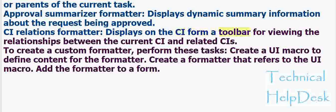Additional formatter examples include: Approval Summarizer Formatter, which displays dynamic summary information about the request being approved; and CI Relations Formatter, which displays on the CI form a toolbar for viewing relationships between the current CI and related CIs. To create a custom formatter, perform these tasks: create a UI macro to define content for the formatter, create a formatter that refers to the UI macro, and add the formatter to a form.